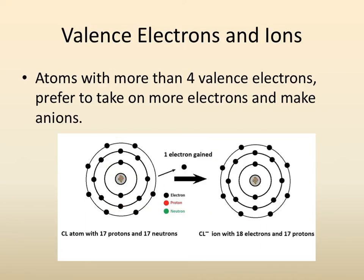Whereas the other way around, atoms with more than four valence electrons prefer to take on the couple of extra electrons that they need in order to complete their octet. For example, this chlorine, we have one, two, three, four, five, six, seven. It's going to be a lot easier for this chlorine to just grab an extra electron and fill that outer shell than it would be to give up seven electrons to drop down to the lower shell.